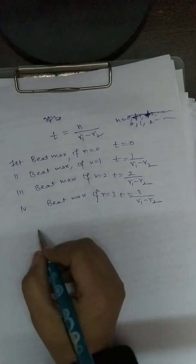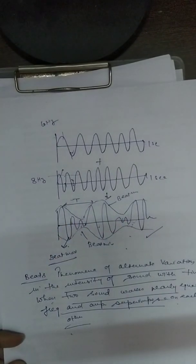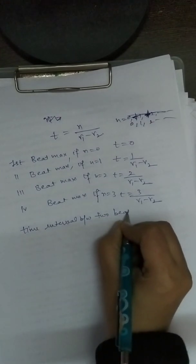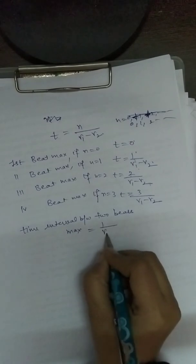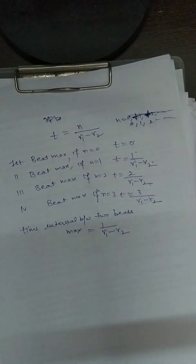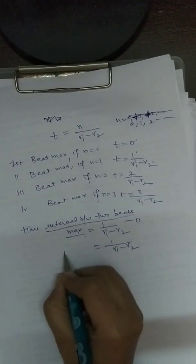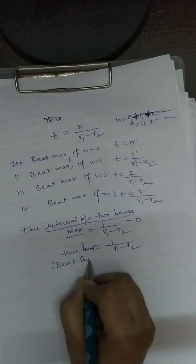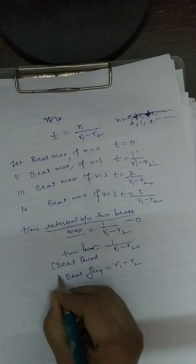The time interval between two beats maxima is the beat period T = 1/(ν1 − ν2). The beat frequency is the reciprocal of this: ν_beat = ν1 − ν2.